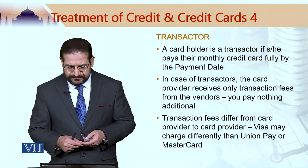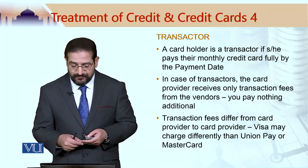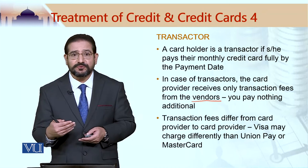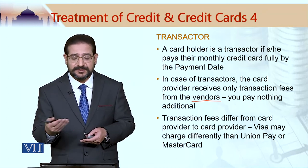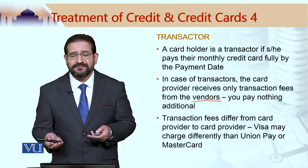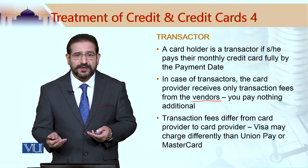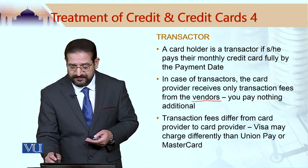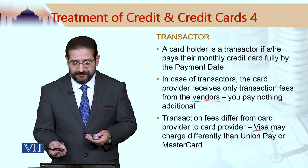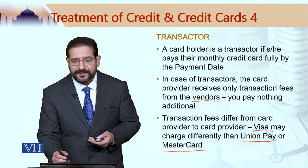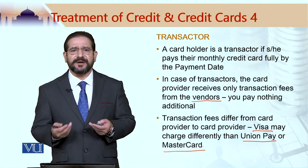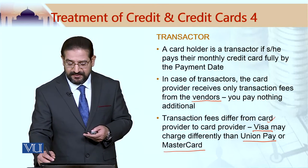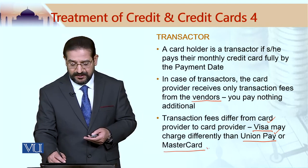The card provider receives income from the vendors — they charge a transaction fee to the shopkeepers, the stores, the restaurants, and so on. These transaction fees differ from technology to technology and from one credit card provider to another. In the case of Visa, for example, the transaction fee may be different from UnionPay — a Chinese company — or MasterCard. The bank is only on the front; the actual technology is provided by Visa, UnionPay, or MasterCard.